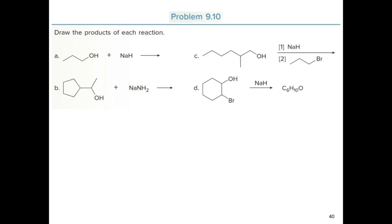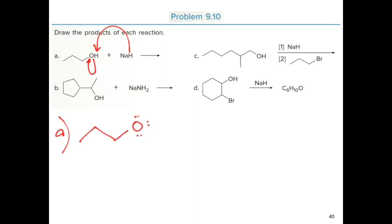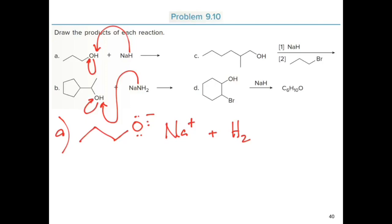Here's practice problem number 10: draw the products of each reaction. For the first one, a primary alcohol reacts with a strong base, so the hydrogen is deprotonated, resulting in formation of an alkoxide ion. For the second reaction, a strong base reacts with another alcohol, deprotonating the hydroxy group hydrogen and again forming an alkoxide ion, with ammonia (NH₃) as the byproduct.